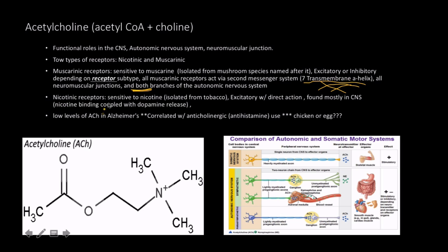The other type of receptor is nicotinic. These are sensitive to nicotine, which is isolated from tobacco. Nicotine has an excitatory effect at these receptors with a direct action found mostly in the central nervous system. If you've ever wondered why smokers get really cranky when they try to quit, it's because nicotine binding is usually coupled with dopamine release in the central nervous system.